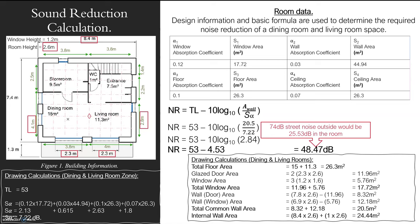So if my street noise was 74 decibels outside, I'd be getting 25.53 decibels in the room.